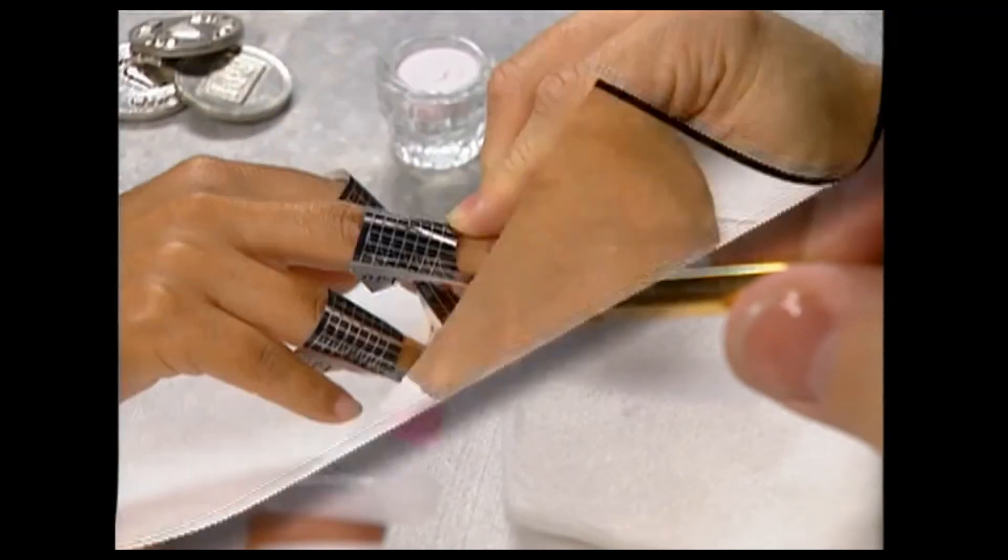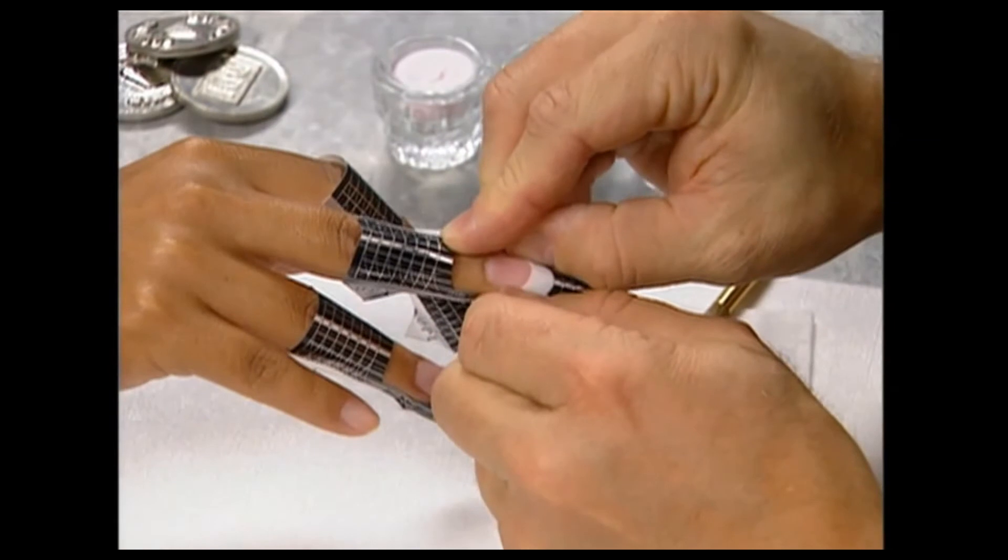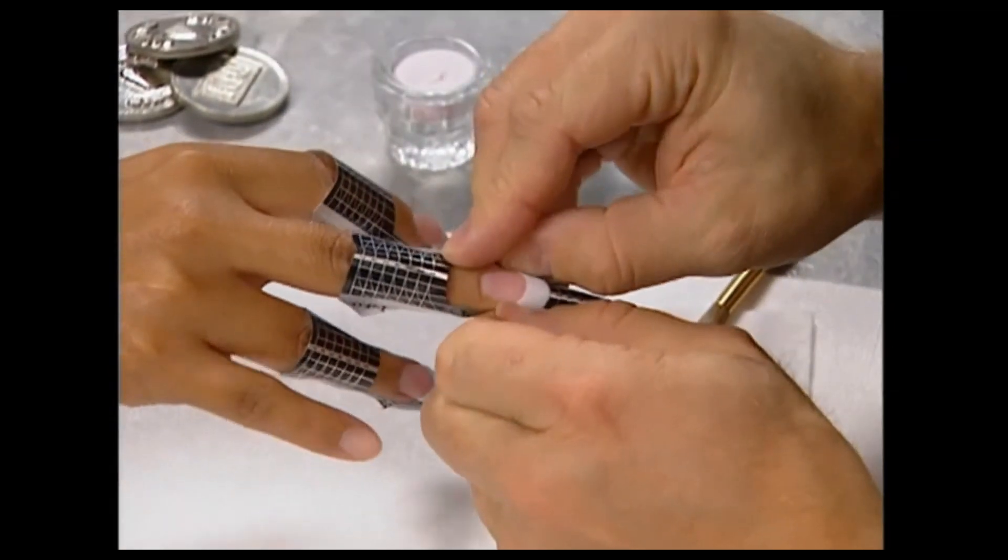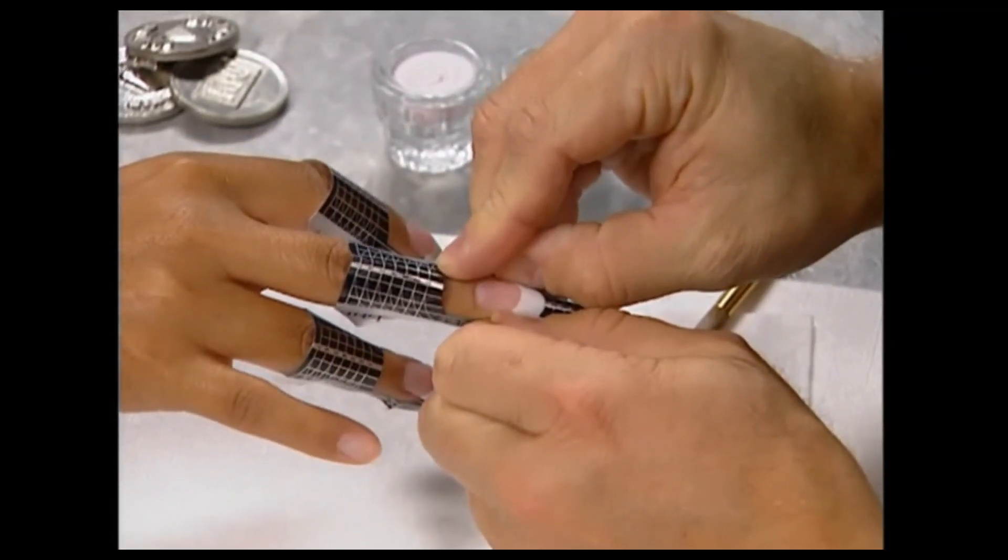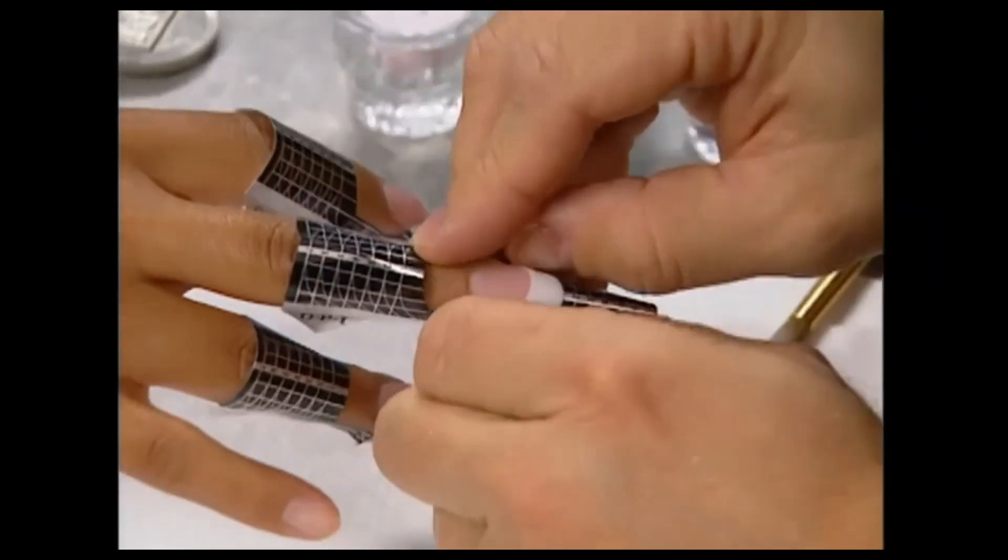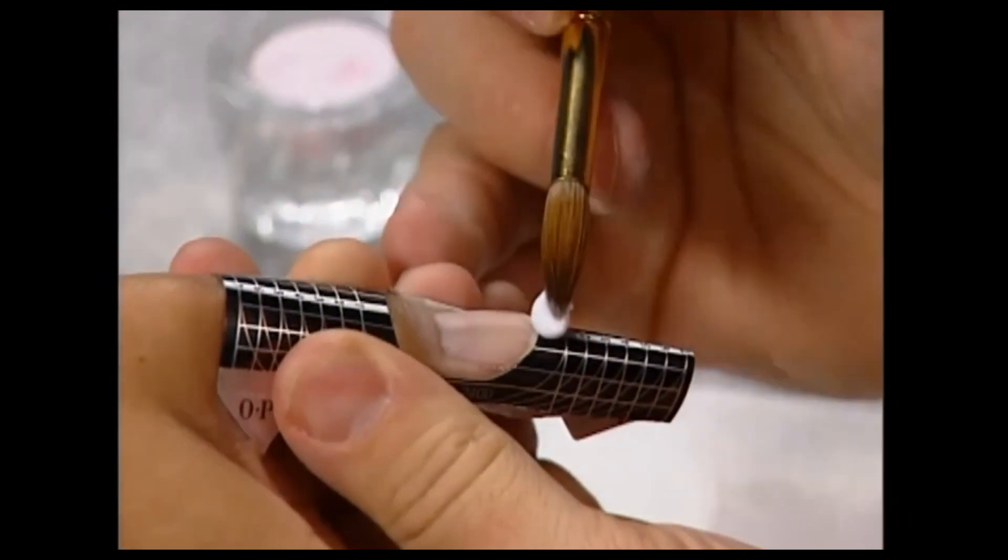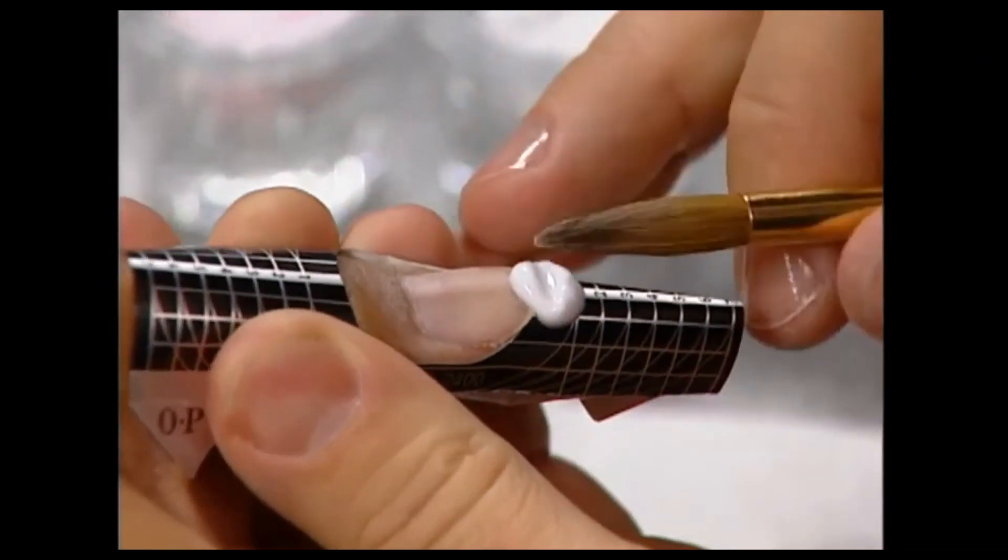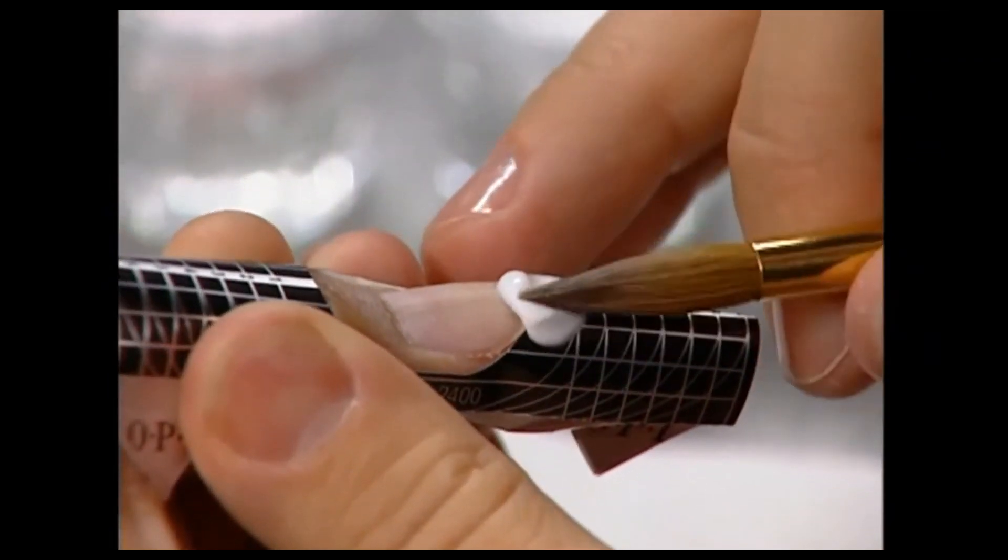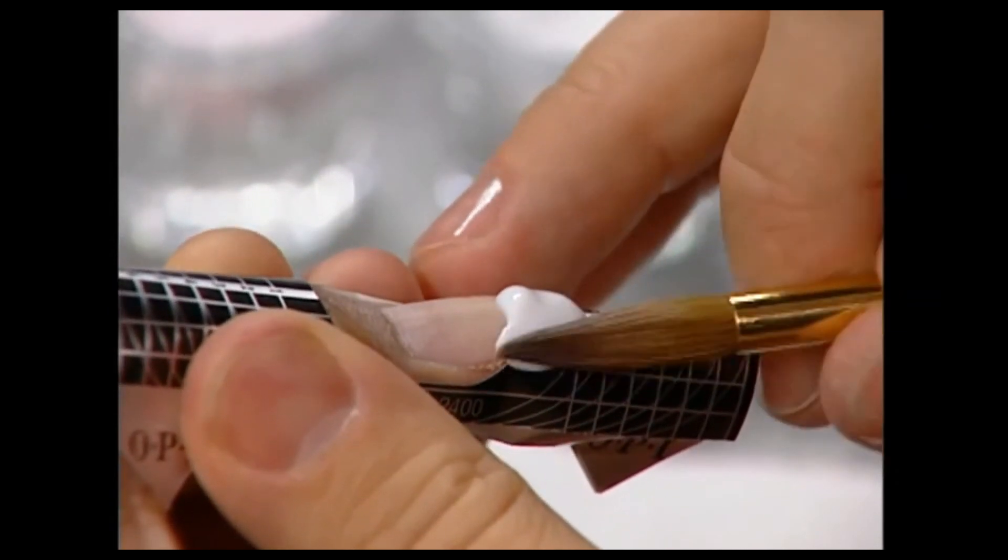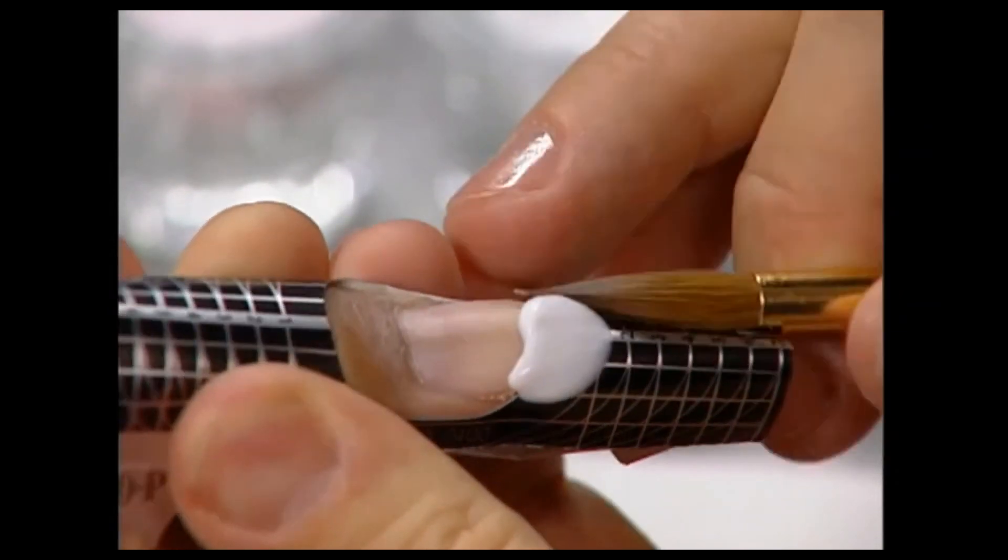To enhance the C-curve of the nail, pinch in the sides before the nail has completely cured. Using the sides of your thumbnails, press in from the body out to the free edge. Repeat application on all fingers from index to pinky, and then apply to the thumbs last.